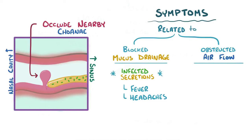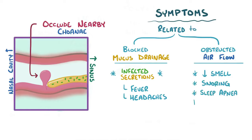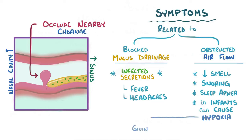Obstructed airflow can prevent air from reaching the olfactory region and decrease the sense of smell. It can also cause snoring and sleep apnea, and in young infants it can cause reduced levels of oxygenation, called hypoxia, which gives a bluish tinge to their skin color.